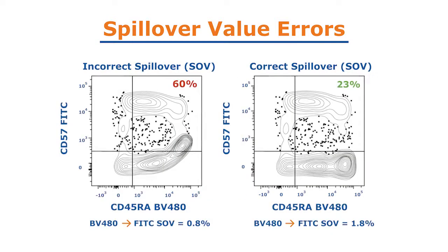In this example, the spillover values were only off by 1%, but this was enough to dramatically impact data quality and interpretation.